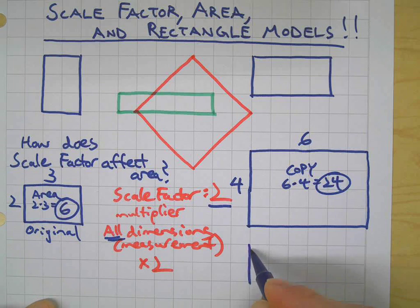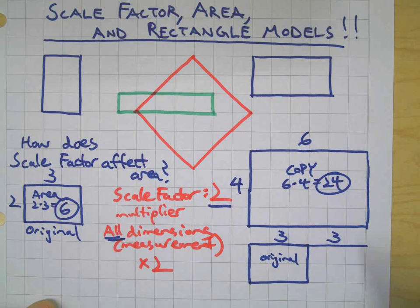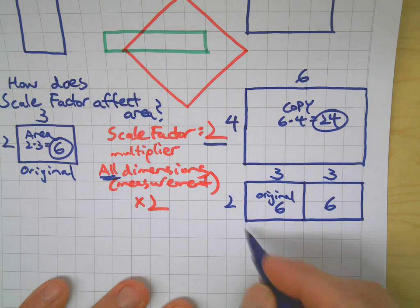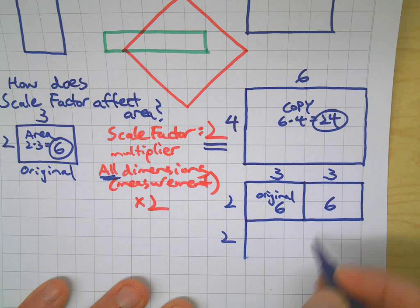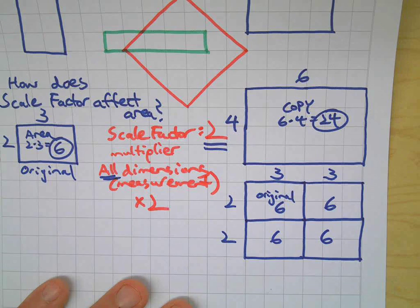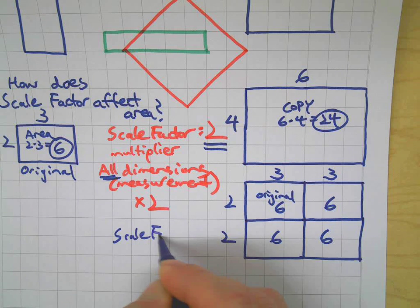Let's use our copy to show you something. Here's our original back — the two by three rectangle. When I apply the scale factor, that's like doubling it. Three times two gives me two threes, which means I've got my original and now effectively another original added to it. If I then apply the scale factor to this dimension as well, what I end up with is four originals, because the scale factor is being applied to two dimensions.